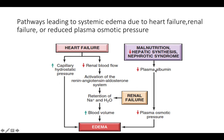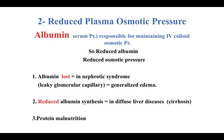Edema is caused by either increased capillary hydrostatic pressure or decreased plasma osmotic pressure. Reduced albumin reduces osmotic pressure. In nephrotic syndrome, the glomerular capillary becomes leaky, causing leakage of albumin, which decreases albumin in the blood and reduces osmotic pressure, resulting in generalized edema.